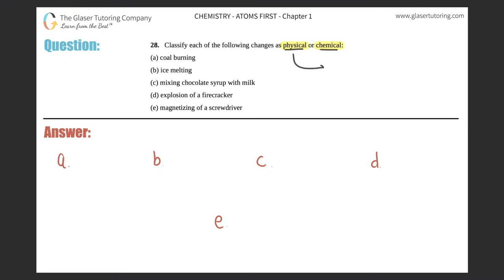Physical changes (PC) are changes that do not disrupt the chemical composition of the substance. What that means is that in a physical change, you're basically only changing states.